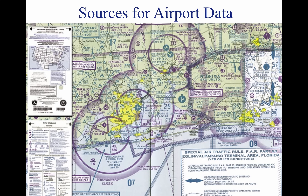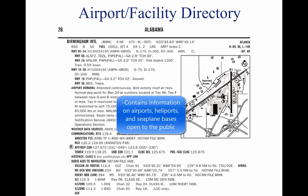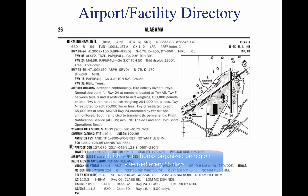Aeronautical charts provide specific information on airports. Tutorial 15, Navigation, contains more information on interpreting aeronautical charts. The AFD provides the most comprehensive information on a given airport. It contains information on airports, heliports, and seaplane bases that are open to the public. The AFD is published in seven books, organized by regions and revised every 56 days. The AFD is also available digitally at www.naco.faa.gov.